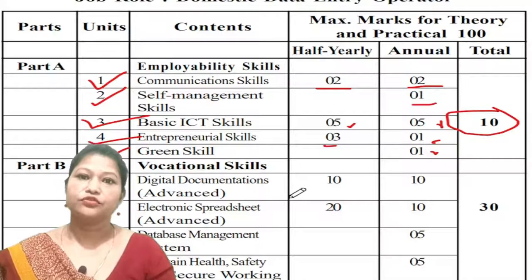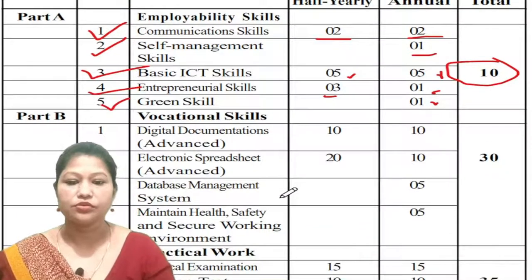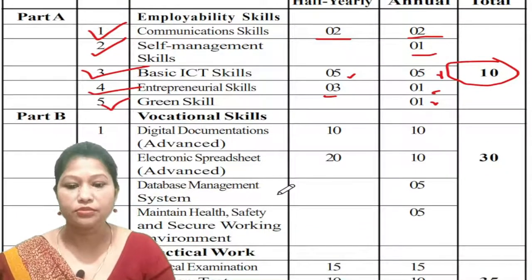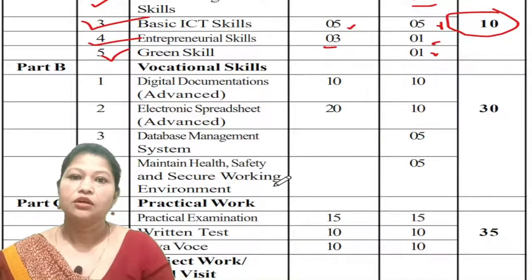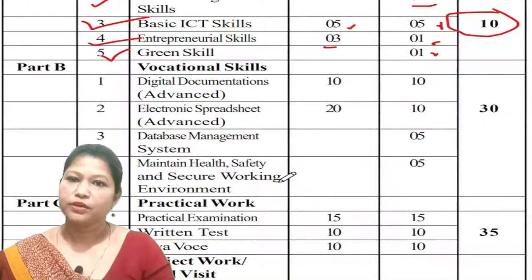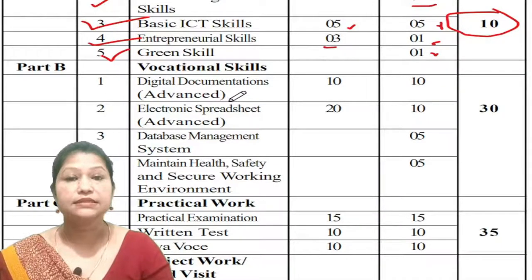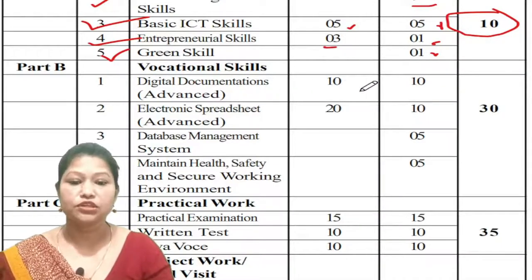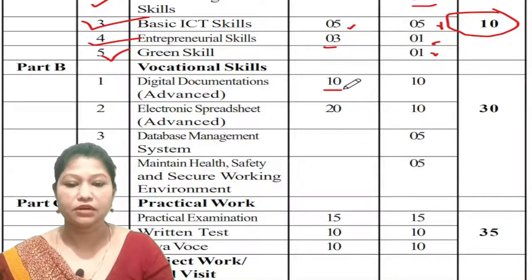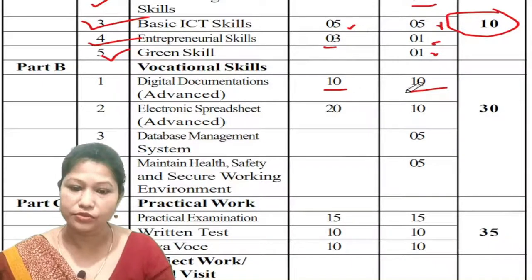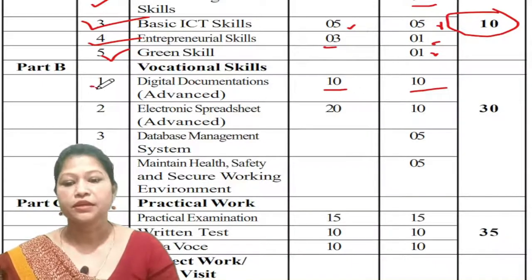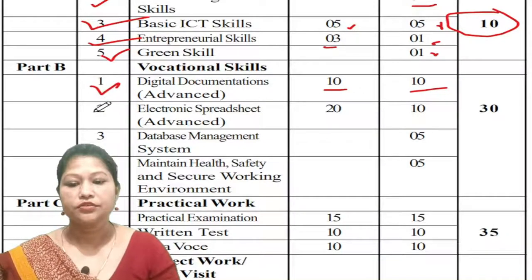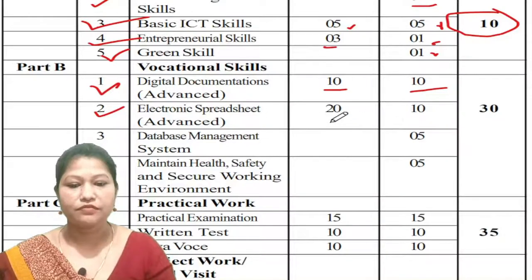The second book is the Vocational Skills book — IT is the main book. Unit number 1 is Digital Documentation Advanced: 10 marks for the half-year and 10 marks for the annual exam. Unit number 2 is Electronic Spreadsheet Advanced: 20 marks for the half-year and 10 marks for the annual exam.